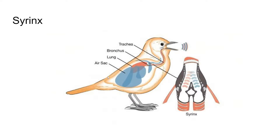Birds have a structure called a syrinx, which is their voice box, and they use it for making noise. Some birds are songbirds and they sing; others screech or make other sounds for communication. This relates to their higher brain capacity and their ability to communicate with one another, and even with us — some of the most expressive birds are those kept in human company, like crows.